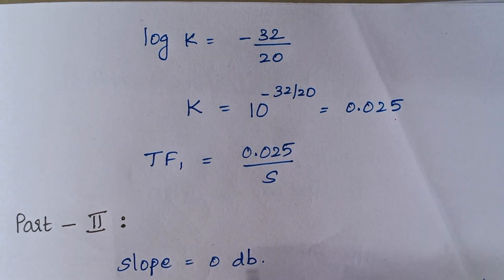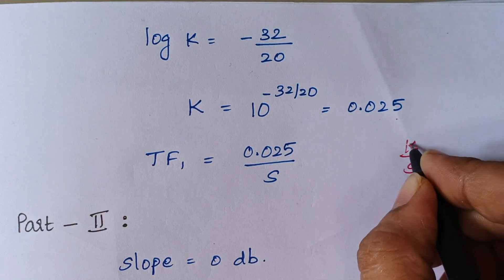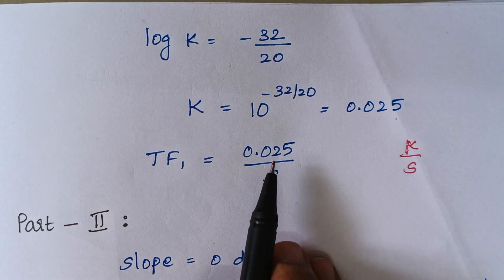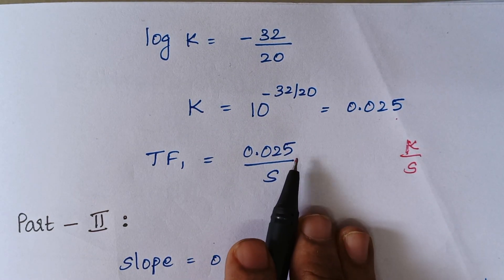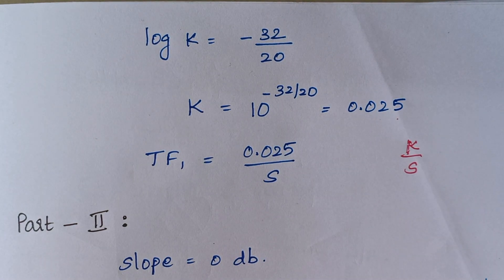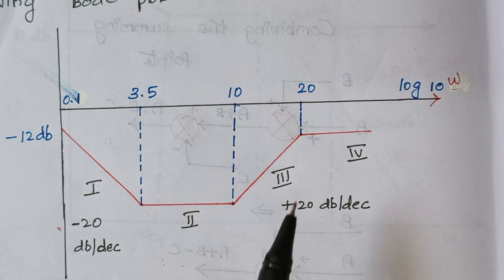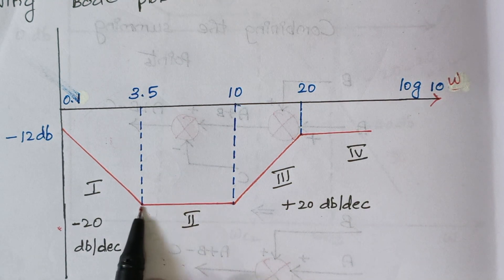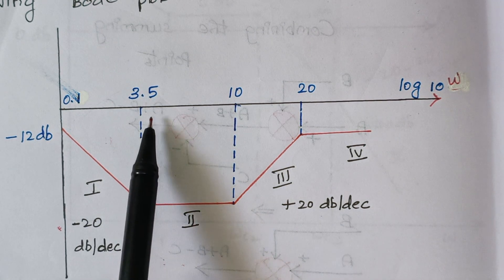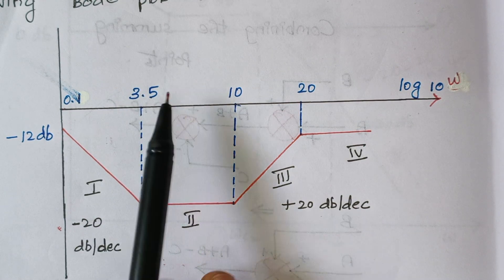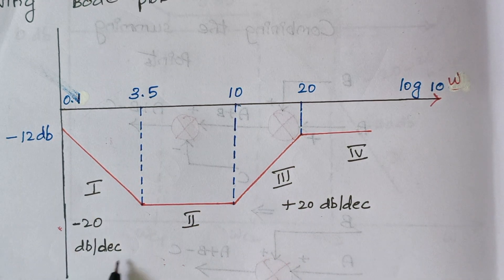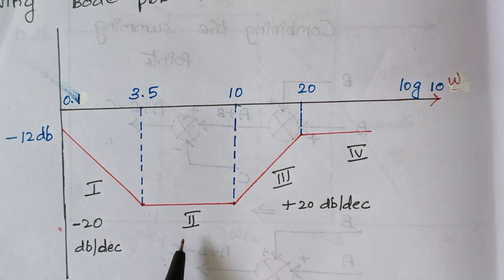Our transfer function from Part 1 is K/S, and we found K = 0.025, so the transfer function is 0.025 divided by S. Moving to Part 2: looking at the plot, the slope in Part 2 is 0 decibels per decade. At frequency 3.5, the slope changes from minus 20 decibels per decade to 0 decibels per decade.